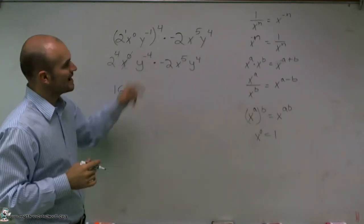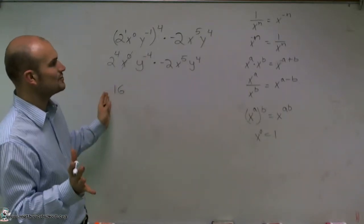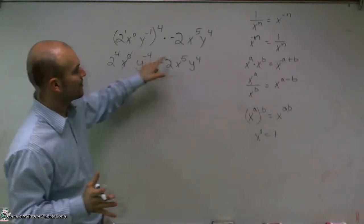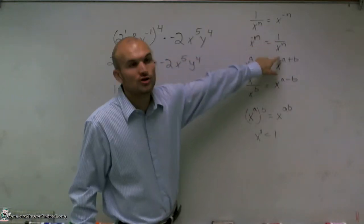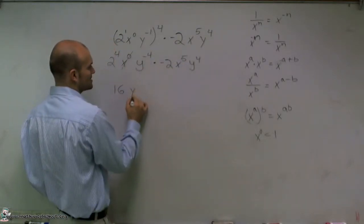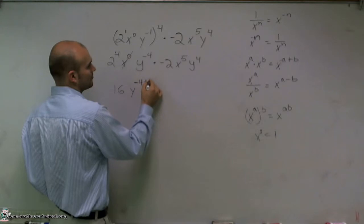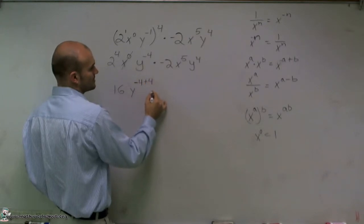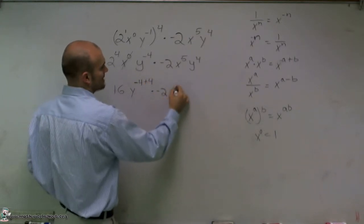Now, y to the negative 4th, before I do anything with this, before I even notice this and say you can put it below, what I can do is say, well, I'm multiplying y times y. So I can say y to the negative 4th plus 4 times negative 2x to the 5th.